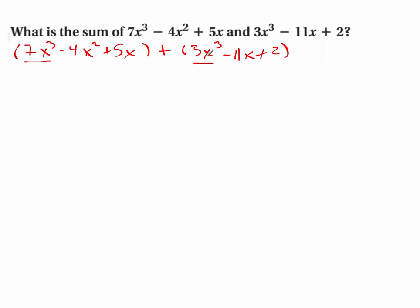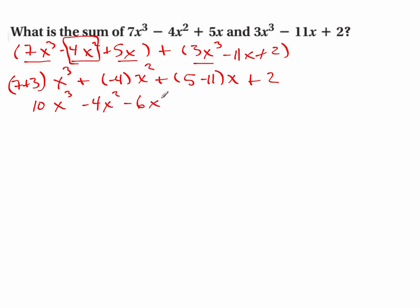So for x³, I have 7 plus 3, so 7 plus 3x³. Let me look at my powers from my x². All I have is a negative 4. I don't have an x² term in this polynomial. Now let me add my linears and then my constants. So this is 10x³ - 4x² - 6x + 2. That's a perfectly fine way to do this.